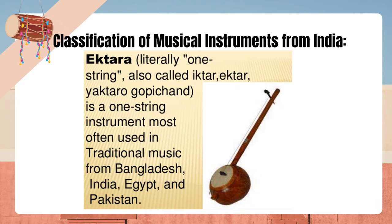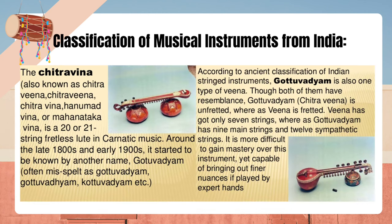Ektara, literally meaning one string, also called Iktar or Gopi Chand, is a one string instrument most often used in traditional music from Bangladesh, India, Egypt and Pakistan. The Chitraveena, also known as Hanumadveena or Mahanataka Veena, is a 20 or 21 string fretless lute in Carnatic music. Around the late 1800s and early 1900s it started to be known by another name — Gautavadyam. According to ancient classification of Indian stringed instruments, Gautavadyam is also one type of Veena. Though both resemble each other, Gautavadyam (Chitraveena) is unfretted whereas Veena is fretted.